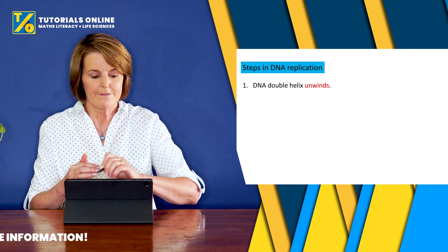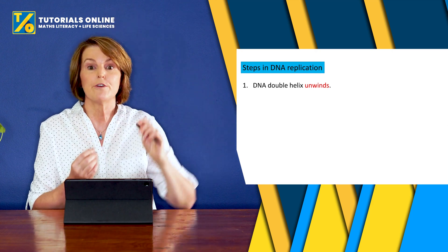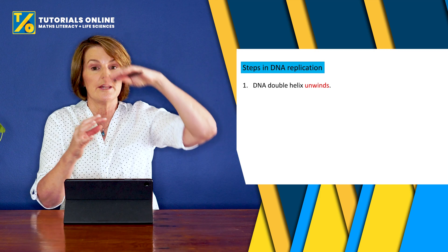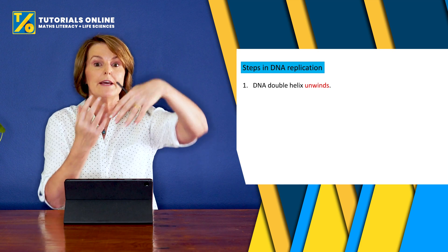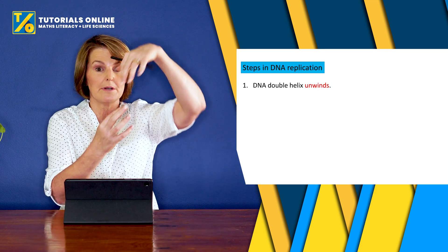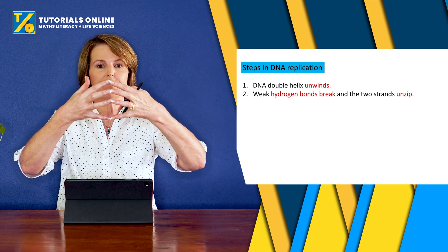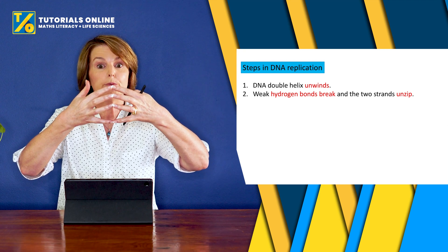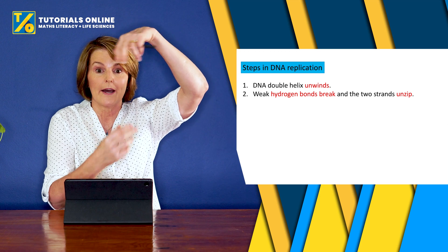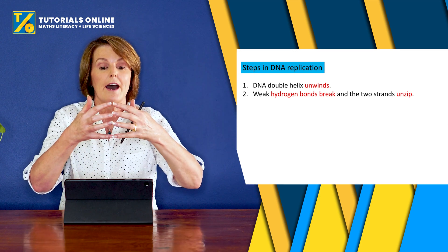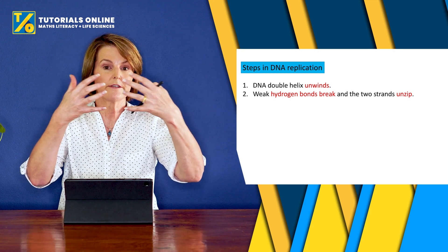The first thing is that you have this DNA double helix, which is all wound up, but first it has to unwind. Remember, DNA is actually a ladder, so you want it to look like a ladder. Step one: the DNA double helix unwinds, the hydrogen bonds break, and it unzips.